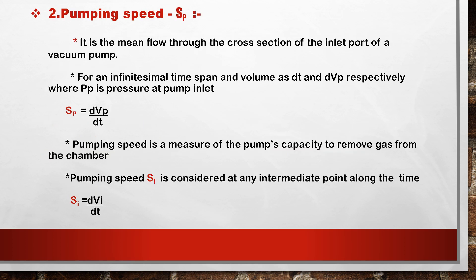Pumping speed, S_p, is the mean flow through the cross section of the inlet port of a vacuum pump. For an infinitesimal time span, the volume is considered as dV_p and time as dt. S_p = dV_p/dt, where dV_p is the infinitesimal volume and dt is the infinitesimal time.